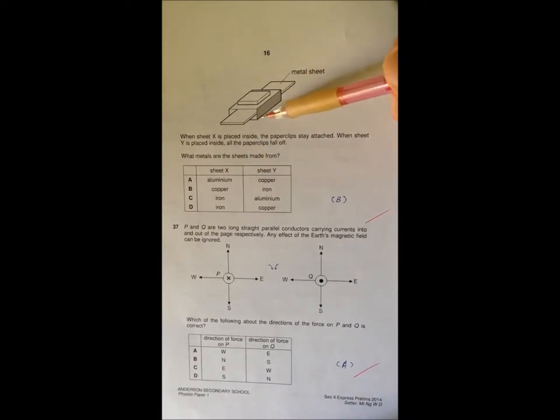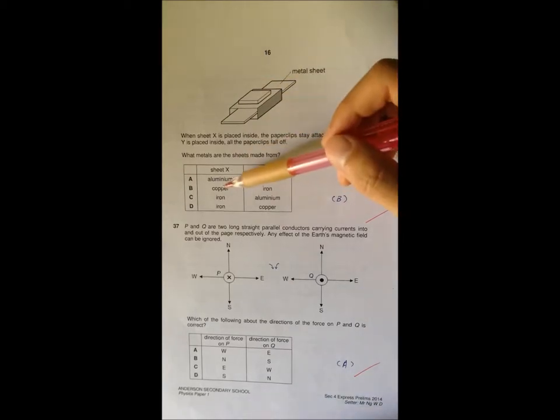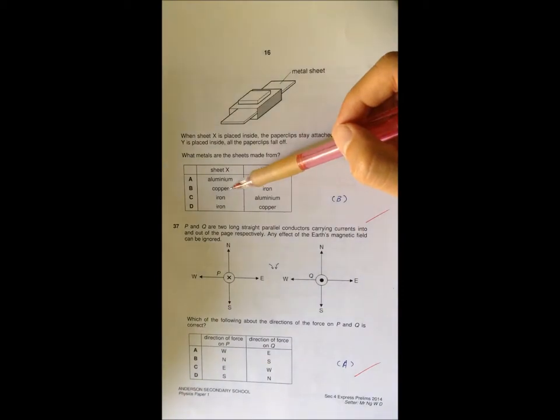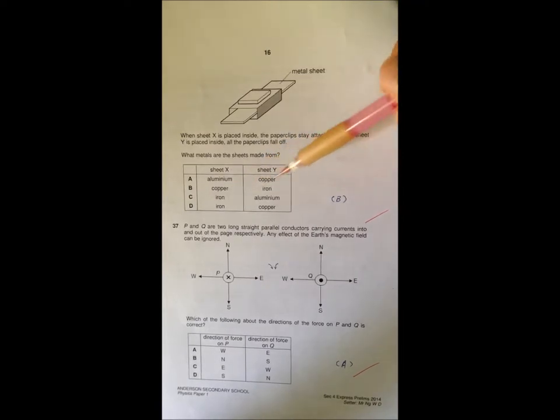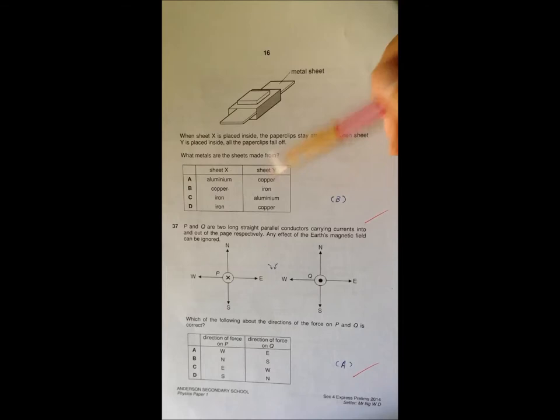The paper clip is still sticking onto the matchbox because the magnetic field line basically bypasses the copper. So that's why the paper clip will still experience the magnetic field. When you put in sheet Y, the paper clip...